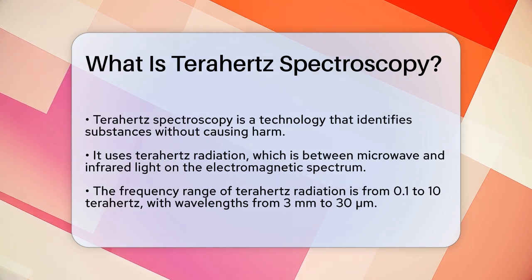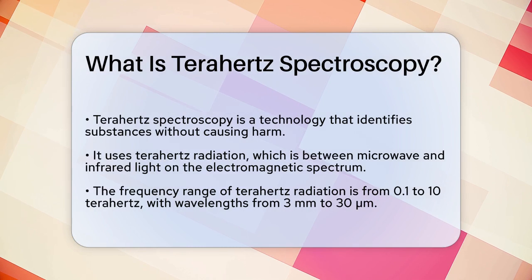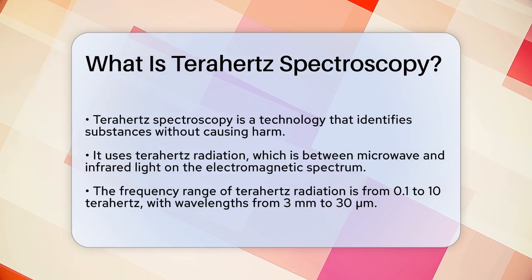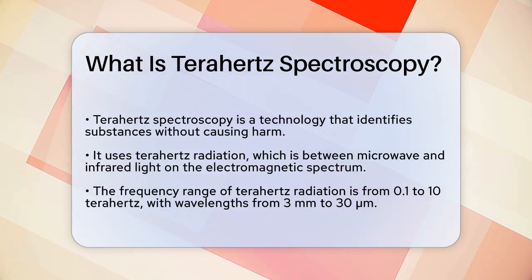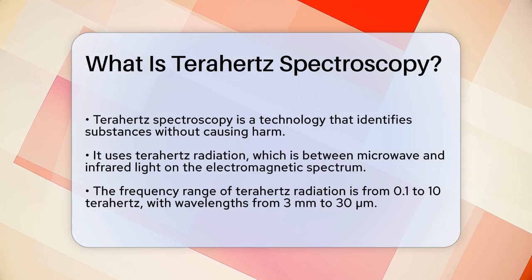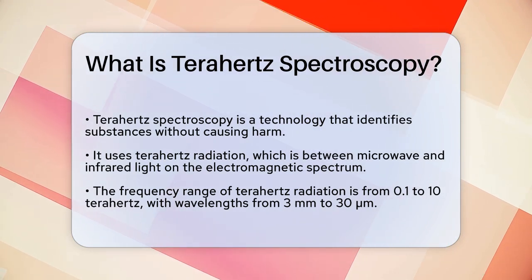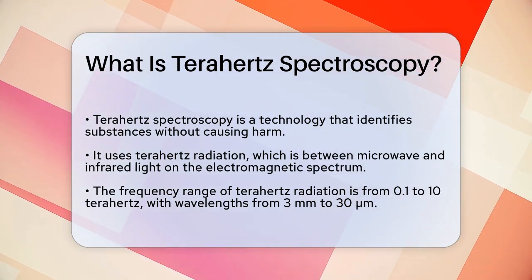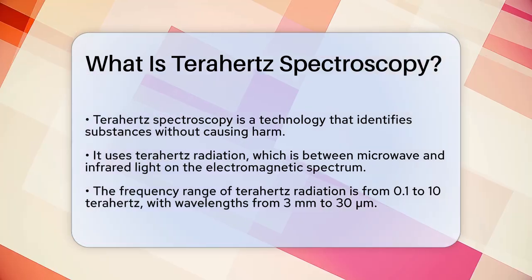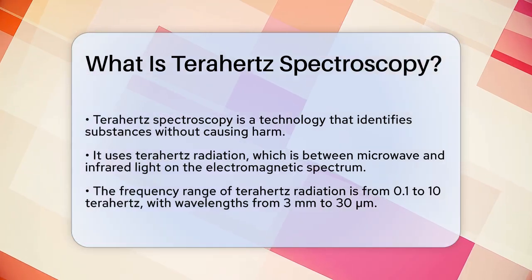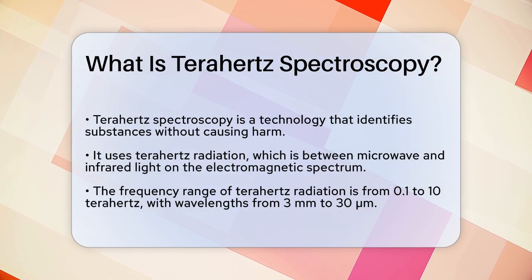Terahertz spectroscopy is a technique that uses a specific type of electromagnetic radiation called terahertz radiation. This radiation falls between microwave and infrared light on the electromagnetic spectrum. It has frequencies from about 0.1 to 10 terahertz, which translates to wavelengths from 3 millimeters down to 30 micrometers.